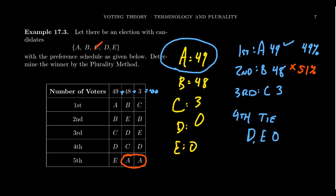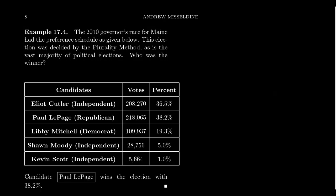Let's say C didn't run in the election — C dropped out before election day. Then the people who would have voted for C, their second choice would have been B. So if C had dropped out, those people would have voted for B instead. In which case B would have gotten 51 votes — a majority and more points than A. So in some respect, the only reason A won was because C ran in the election. This is an example of what we call the spoiler effect: the outcome of the election would have been different if a candidate — known as a spoiler — had not run. So C perhaps spoiled the election for B.